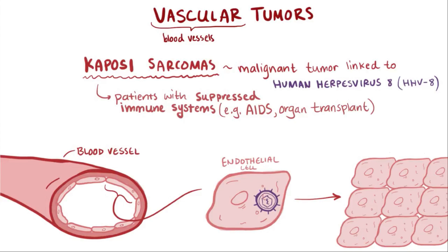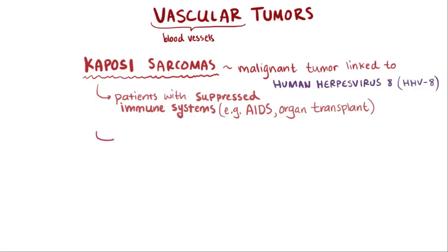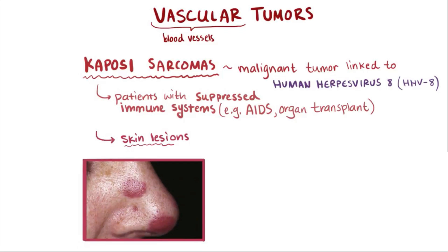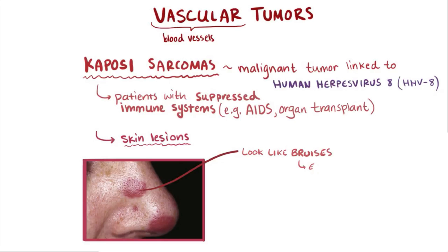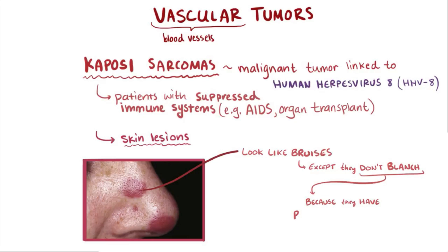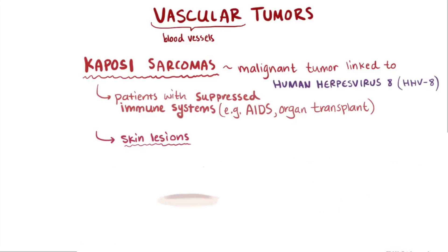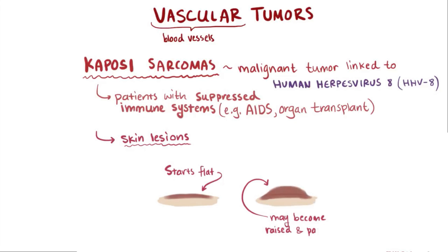The most common symptoms of Kaposi sarcoma affect the skin, causing purple and red lesions. These lesions look somewhat like a bruise, but unlike a bruise they don't blanch or turn pale when pressed. That's because Kaposi sarcoma has blood-filled blood vessels, whereas bruises are caused by blood leaking outside of blood vessels into the skin. Initially these lesions start off flat, but over time they might become raised and more painful.